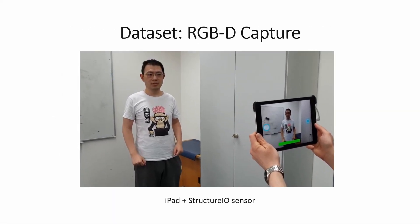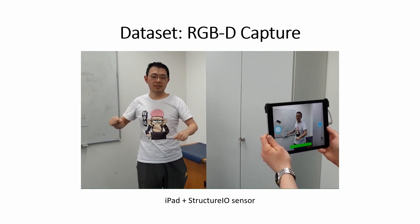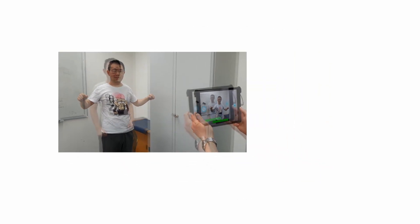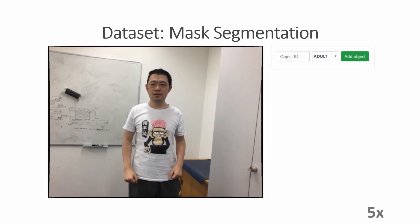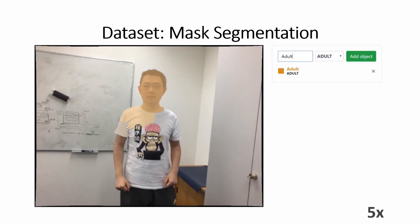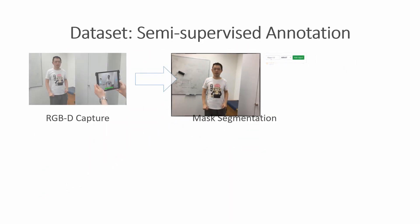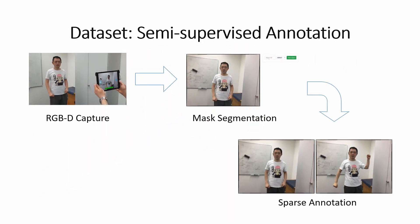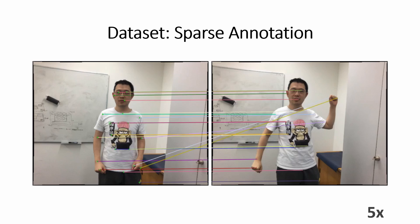Semi-supervised annotation proceeds in the following steps. We use an iPad in combination with a Structure I/O sensor to record RGBD videos containing one or more non-rigidly deforming objects. We sample a few frames of each sequence and annotate dynamic object masks. To accelerate annotation, we use superpixels as a brush unit. We then sample frame pairs in each sequence and annotate sparse matches from the source to the target frame. If some source parts are occluded, we also annotate occlusion points.